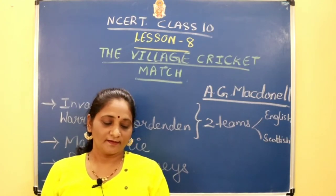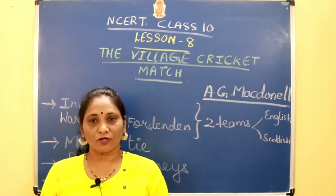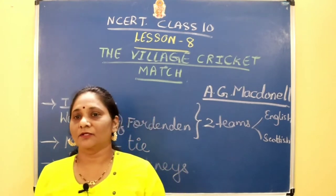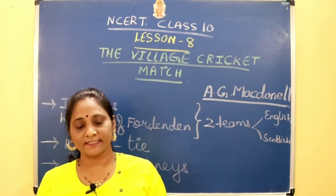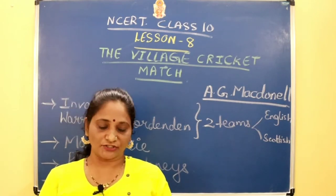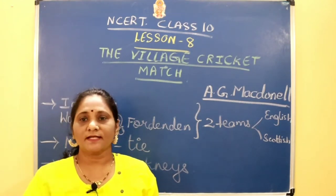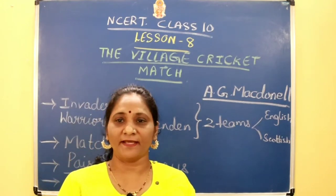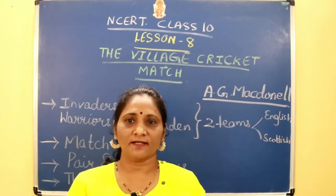Coming to the lesson, there are two teams: the Scottish team and the English team. The two teams are named as the Invaders and the Warriors of Fordenden. To understand the lesson, you need to know which player is playing under which team, so make a list of names in your book.